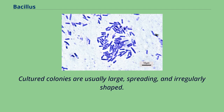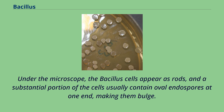Cultured colonies are usually large, spreading, and irregularly shaped. Under the microscope, the Bacillus cells appear as rods, and a substantial portion of the cells usually contain oval endospores at one end, making them bulge.